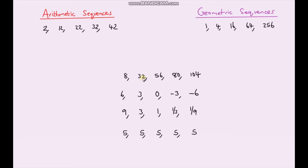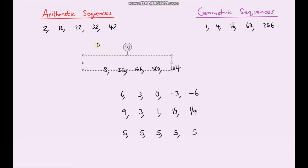To go from eight to thirty-two, the easiest thing is to multiply by four — but thirty-two times four doesn't give me fifty-six, it gives a much higher number. So it's not geometric; it's going to be arithmetic. What I'm adding to go from eight to thirty-two is twenty-four. Thirty-two plus twenty-four gives fifty-six, plus twenty-four is eighty, plus twenty-four is a hundred and four. So this one is also arithmetic.